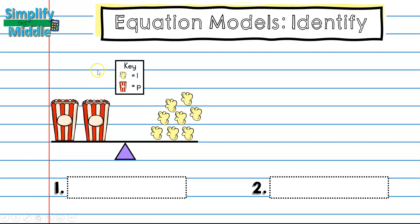First thing that I notice is that there is a key. In the key I can see that a piece of popcorn represents the constant 1 and that the popcorn container represents the variable p. On this side of the equation, I see that there are two popcorn containers. That means that there is 2p.